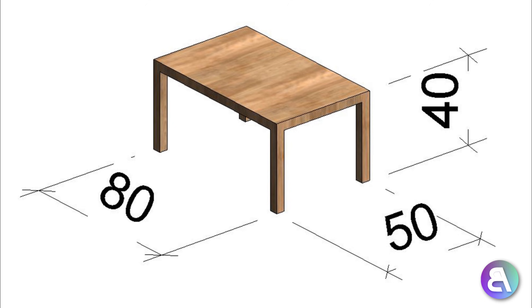What's up guys, BalkanArchitect here. In today's tutorial I'll be doing another beginner tutorial, showing you how to create a simple yet parametric family in Revit. It will be a furniture family — just a simple table — and then we'll do some parameters and create different family types for this table.